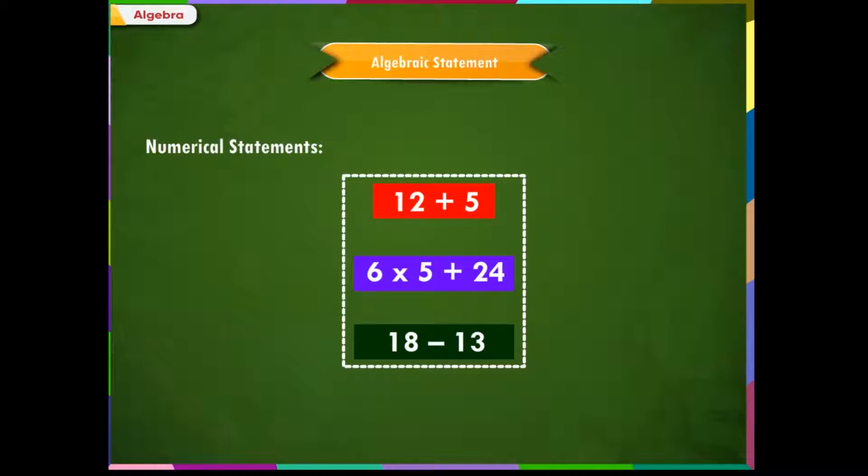Let us understand what algebraic statement is. For this, we need to know the meaning of statement. A statement can be a single term or group of terms combined with symbols like plus, minus or multiplied by. For example, 12 plus 5, 6 into 5 plus 24, or 18 minus 13. Such statements are called numerical statements.